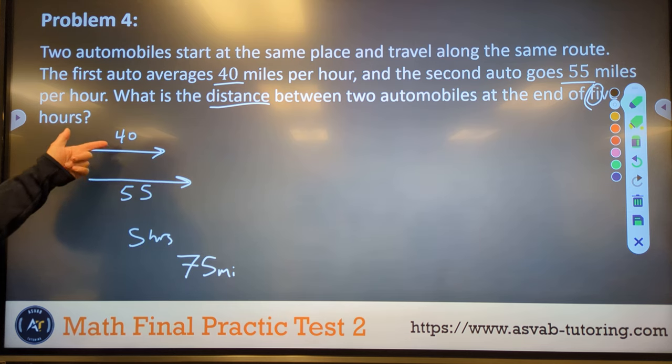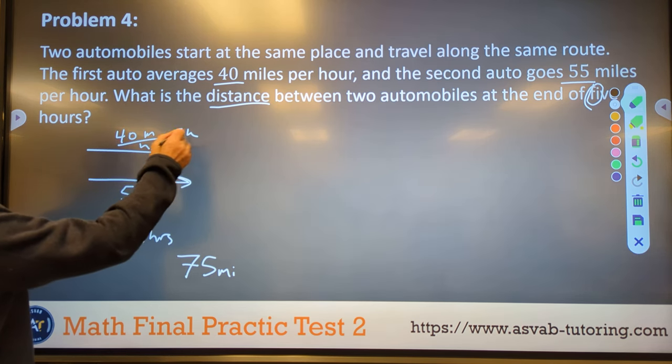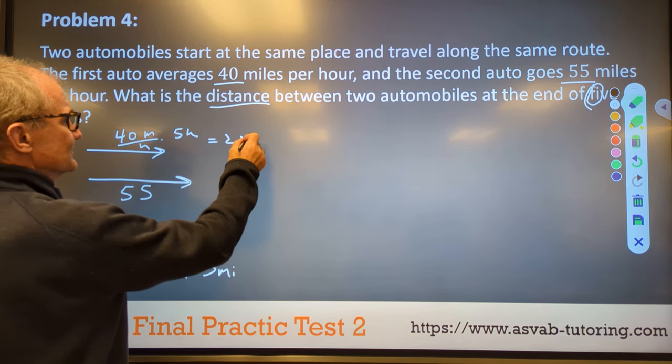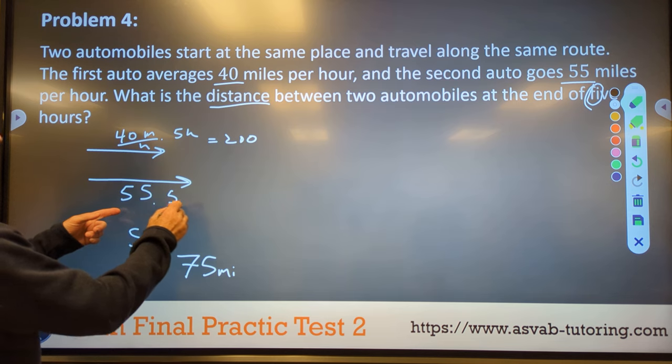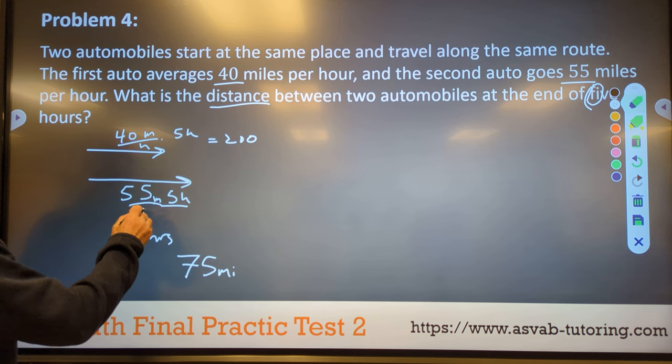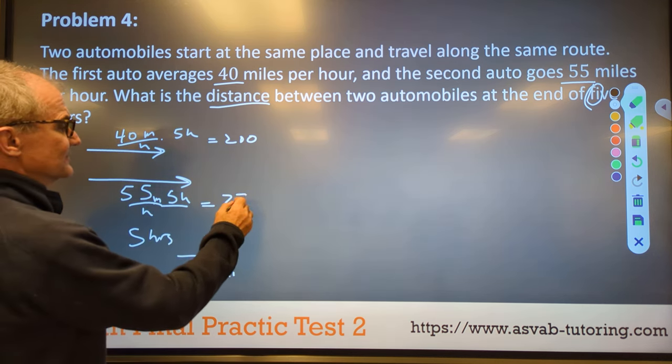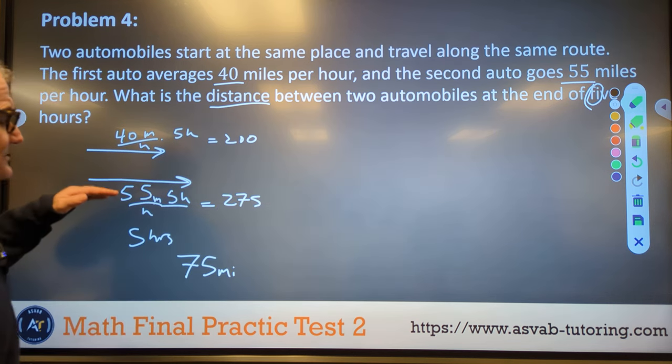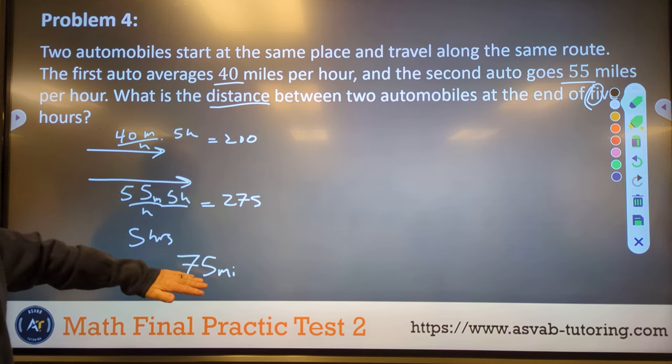Another way to do it is say how many miles does this one go in five hours? Well, if it's 40 miles per hour, I can multiply that by five hours. Hours will cancel. It'll give me 200 miles. Do the same thing here. This one's also going for five hours. And this is miles per hour. Hours cancel. That gives me 275. So at the end of five hours, this one has gone 275 miles. This one 200 miles. The difference 75 miles.